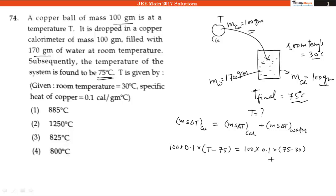We know that the mass of water is 170 and the specific heat of water is 1 calorie per gram per degree Celsius. The temperature difference here also is 75 minus 30. After calculating, we can find easily that capital T is equal to 885 degrees Celsius, which is our option number 1.